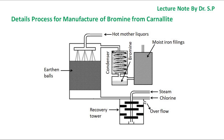Hot mother liquor containing bromide is fed into a tower packed with earthen balls, while chlorine gas is passed into the tower from the foot. Mother liquor slowly slides down and chlorine slowly rises up. As a result, bromine vapors are formed. The liberated bromine vapors pass through a condenser where they condense to bromine liquid. Uncondensed bromine vapors pass through a tower packed with moist iron fillings where bromine gets absorbed, forming ferrosopheric bromide. The downward coming mother liquor may carry some bromine, collected into a recovery chamber fitted with shelf-like partitions. Steam is blown into the tank and bromine rises up to the tower and condenses to bromine liquid.